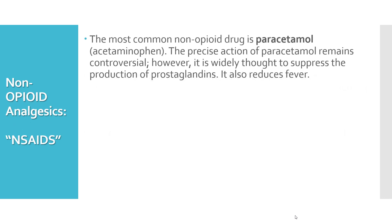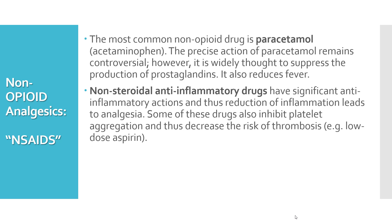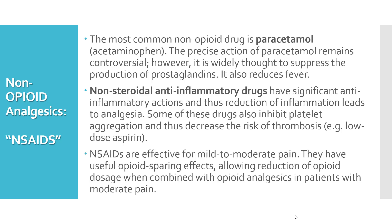Now for non-opioid analgesics — we will look at NSAIDs, non-steroidal anti-inflammatory drugs. The most common non-opioid drug is paracetamol or acetaminophen; although its precise action remains controversial, it is thought to suppress the production of prostaglandins and also reduces fever. Note that paracetamol is sometimes classified separately from NSAIDs. NSAIDs provide analgesia and some also inhibit platelet aggregation, decreasing the risk of thrombosis — for example, low-dose aspirin. NSAIDs are effective for mild to moderate pain and have useful opioid-sparing effects, meaning they can be used in combination with opioids to reduce the opioid dose.